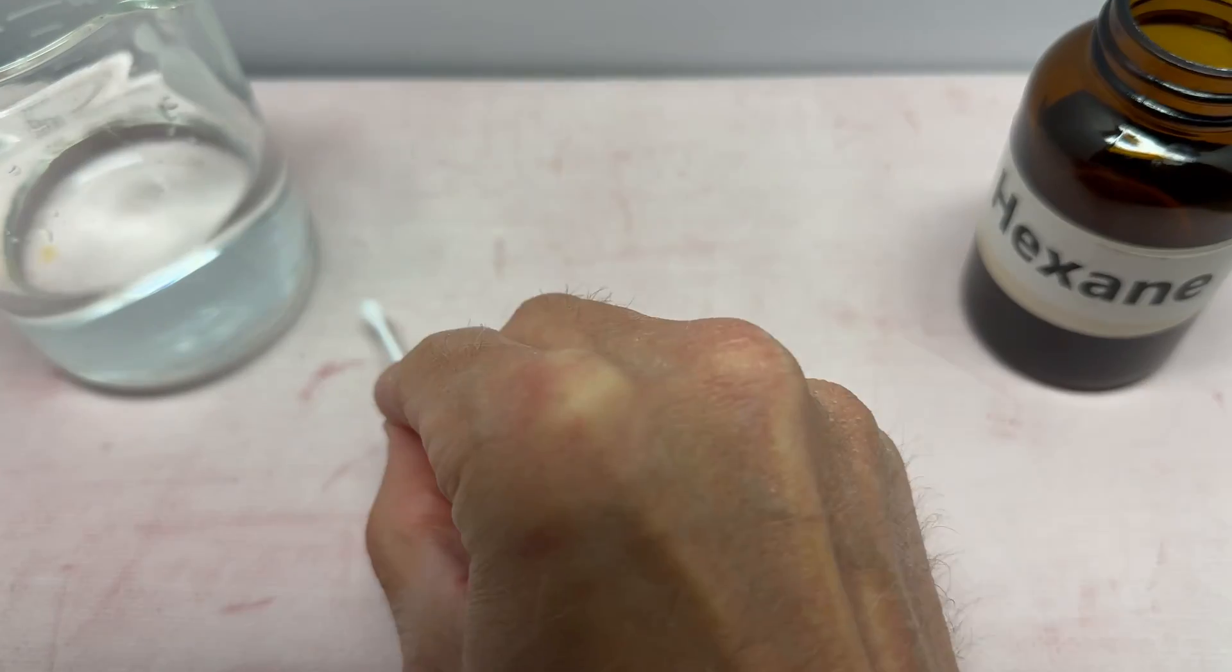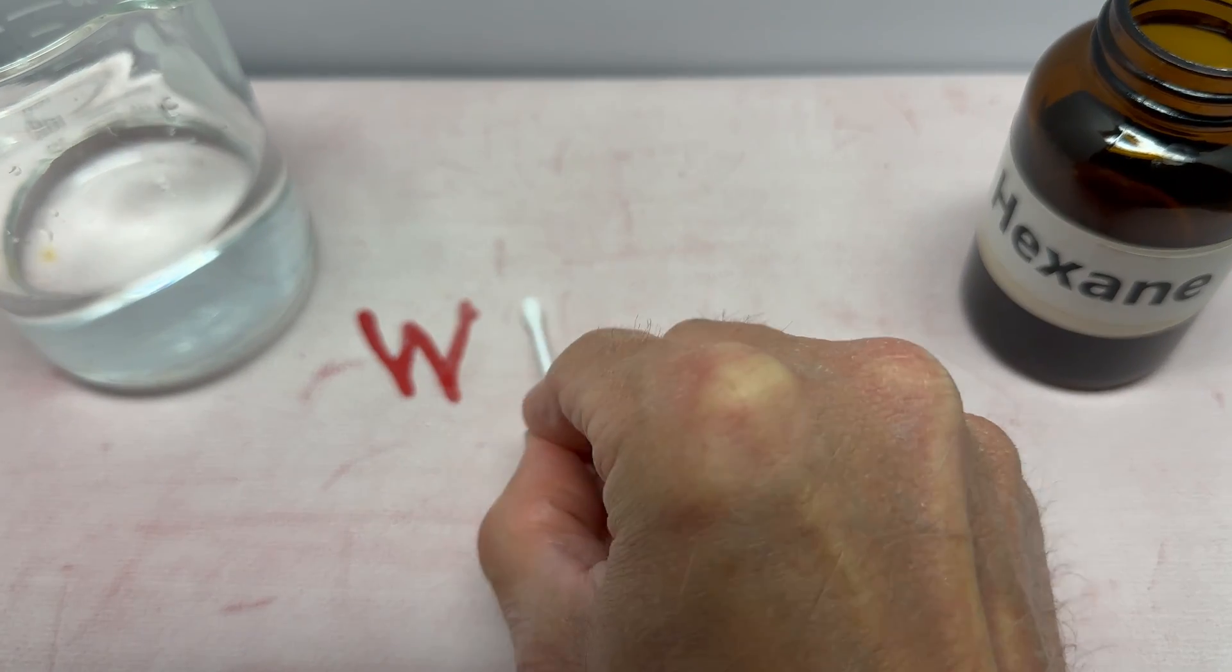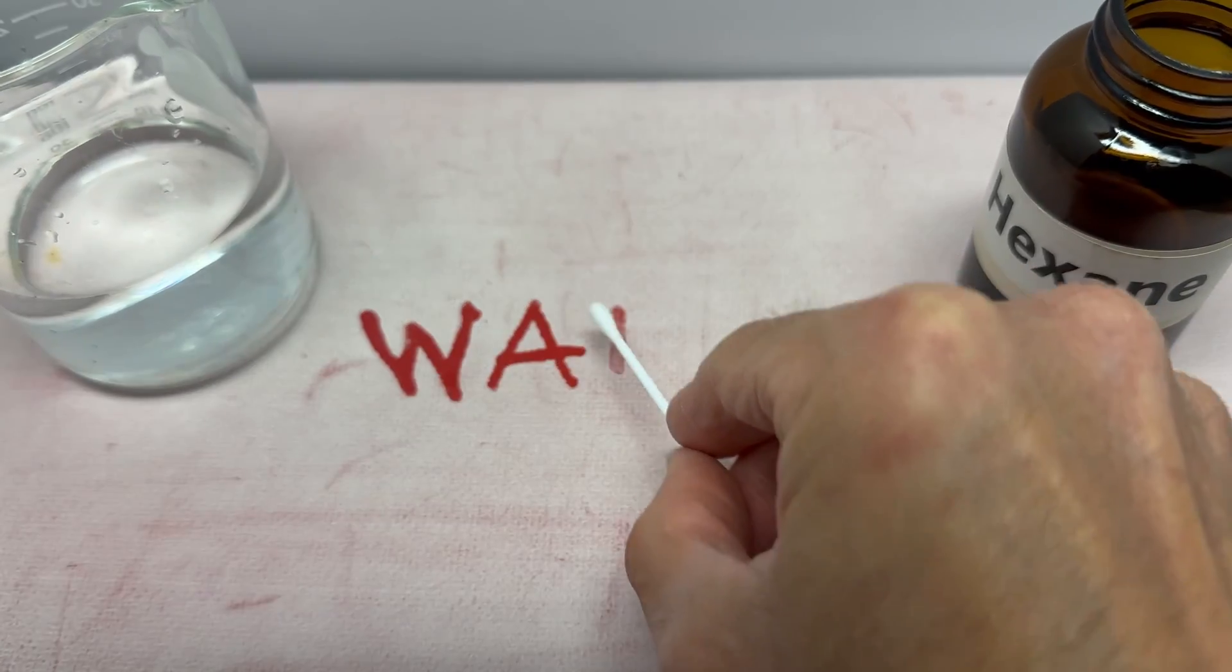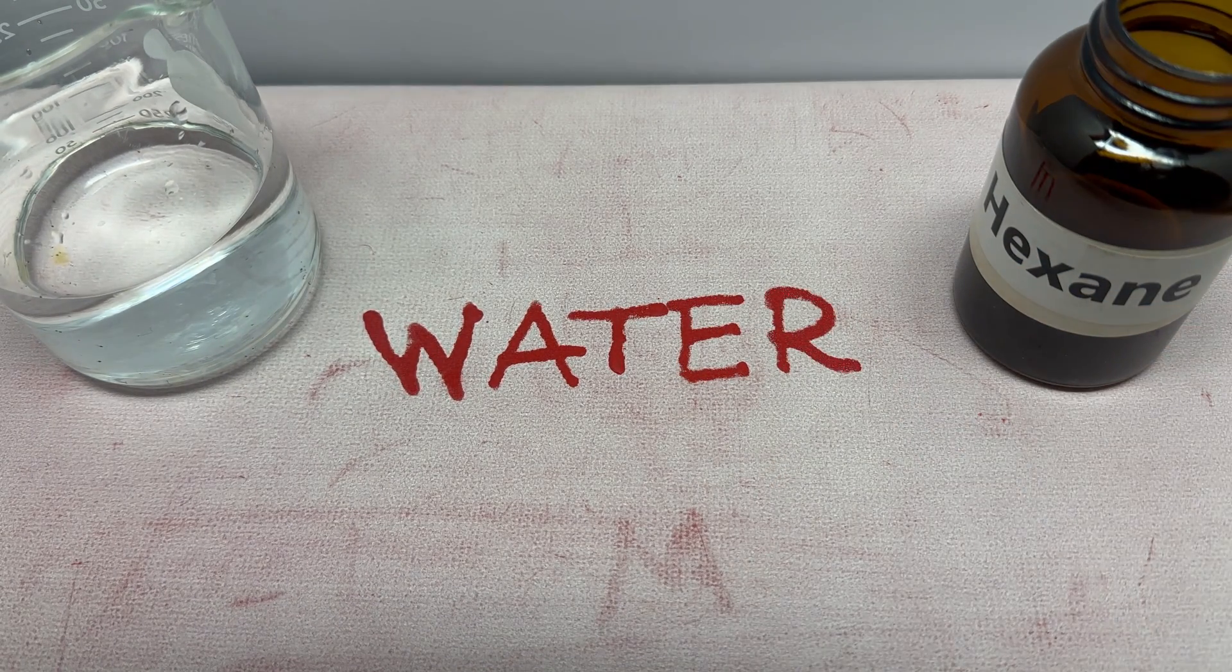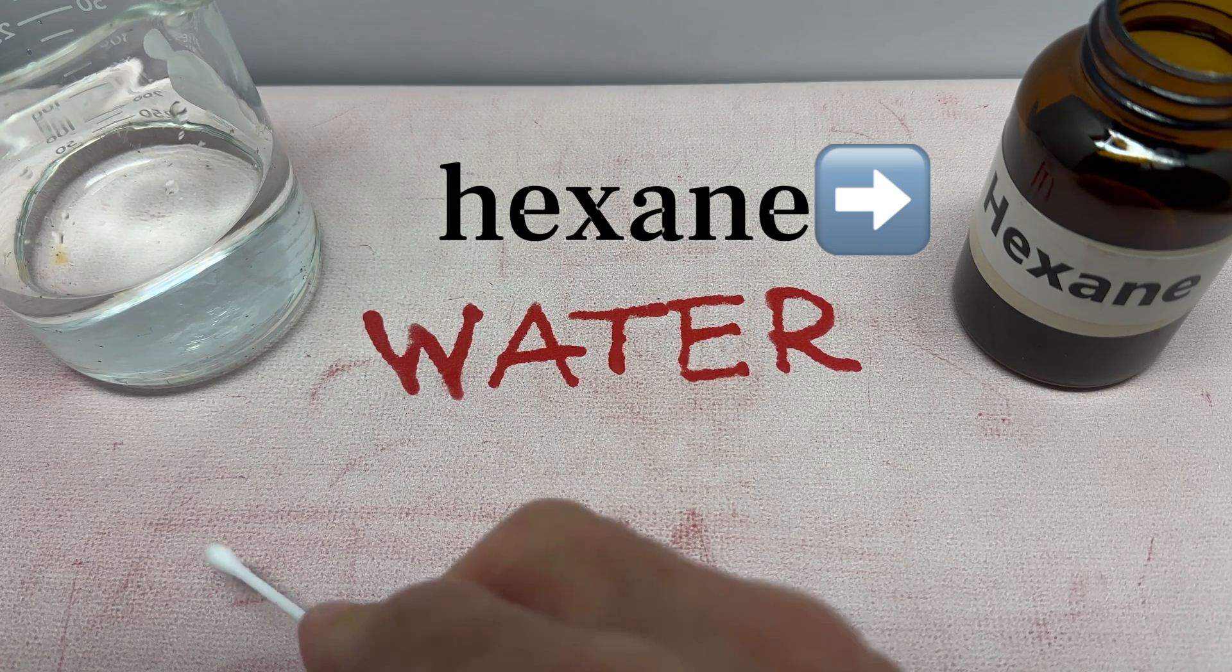If my claim was true, then only liquids that are capable of hydrogen bonding, like water, should be able to cause the color change. And liquids like hexane, which are incapable of forming hydrogen bonds, should not be able to cause the color change.